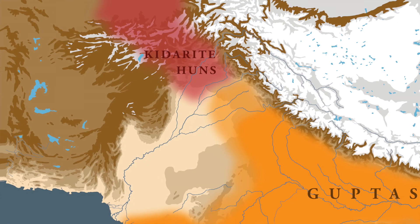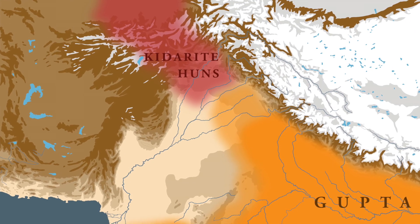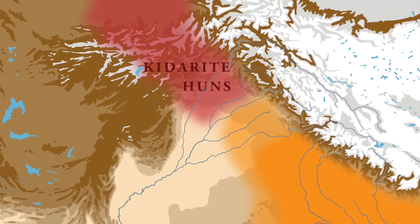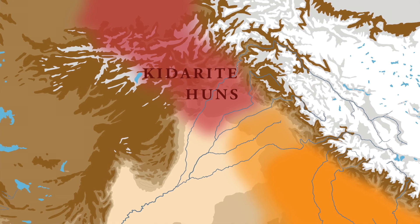The Hunnic interlude in Indian history lasted for two centuries. It was around the end of the 4th century AD that the Huns had established their foothold in the Indian subcontinent. During this period they controlled the northwestern part of the Indian subcontinent, and from this period onwards to the end of the 5th century AD, the Huns were not able to make deep inroads. This was mainly because of the presence of the Gupta Empire.